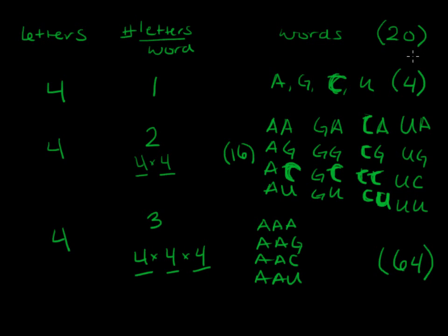We have more than 20 possible combinations. With 64 possible words we definitely cover 20 amino acids. But what do all those extra words do? Each of these words codes for a unique amino acid, but you could have multiple words code for the same amino acid.